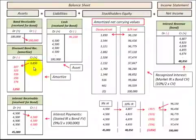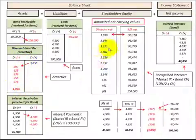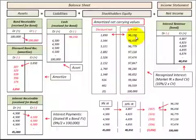To summarize: we've amortized the discount on bonds receivable down to a zero balance, and by doing that we increased the carrying value of the bond by that discount amount each period. We started with a $96,150 carrying value and ended with a $100,000 carrying value, which is the maturity value of that bond.